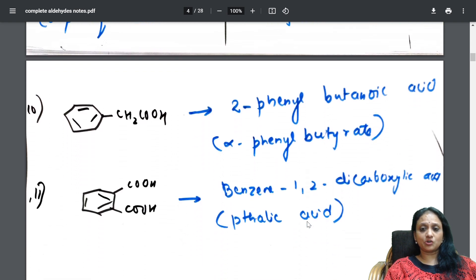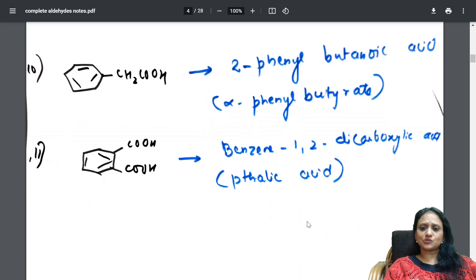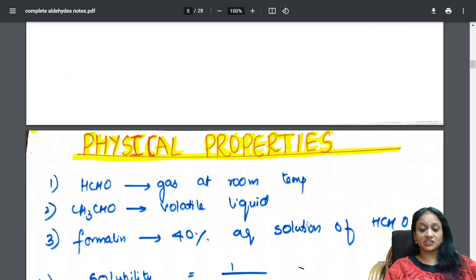Slowly, I have taken examples from carboxylic acid also. This also is there with this. All the examples are covered. Now, if you see students' physical properties.